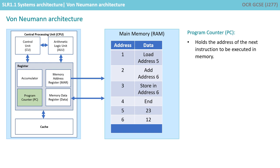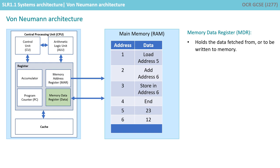The program counter always holds the memory address of the next instruction to be executed. Once we fetch this address from the program counter, we increment its contents by one, so it points to the next instruction to be executed. The memory address register holds the address of where data is to be fetched from or stored into. The memory data register holds any data which has been fetched from memory or is about to be written to memory. The accumulator holds the results of calculations which have been performed by the arithmetic logic unit.